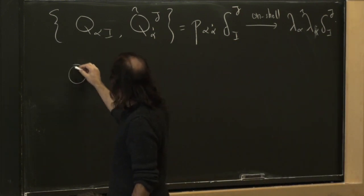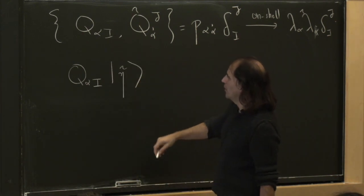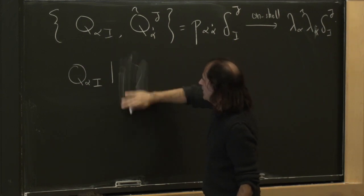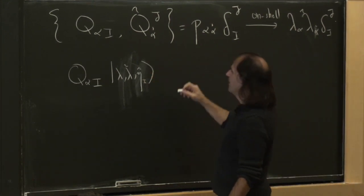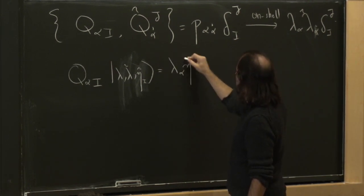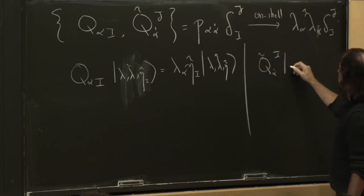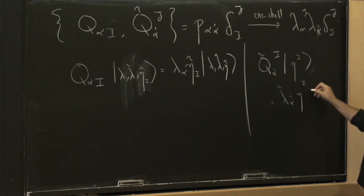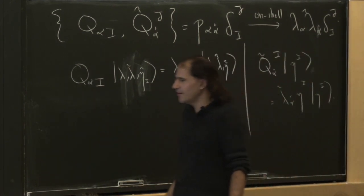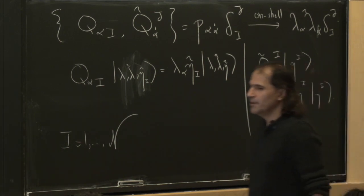What we said is that it's a good idea to diagonalize as much of the SUSYs as we can. So we can introduce these Grassmann coherent states which are eigenstates of Q_alpha. There's an implicit lambda and lambda-tilde, but we care about the dependence on this Grassmann variable eta-tilde with a lower i. This equals lambda_alpha times eta-tilde_i acting on |lambda, lambda-tilde, eta-tilde>. Or you could alternately choose to diagonalize Q-tilde, giving states |eta_i> = lambda-tilde_{alpha-dot} times eta with an upper index. These are different states.